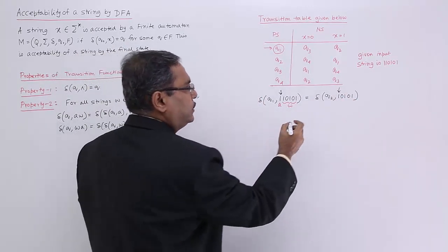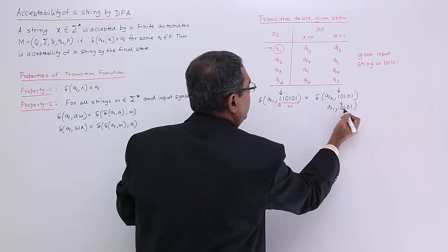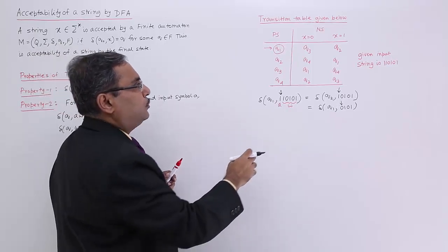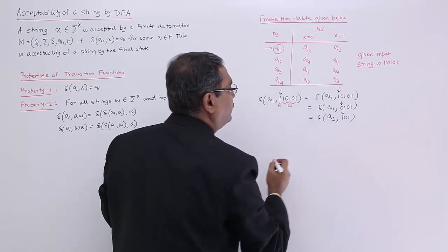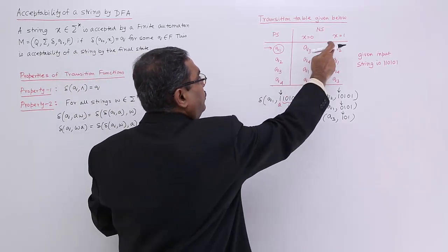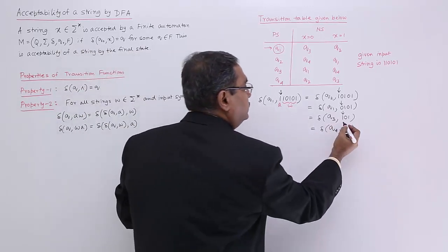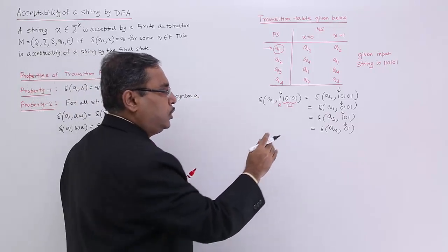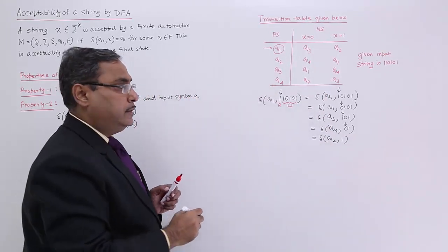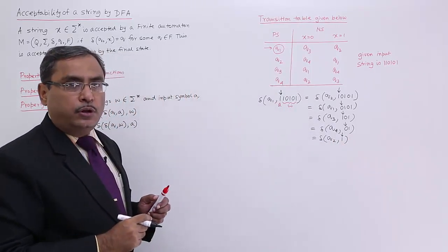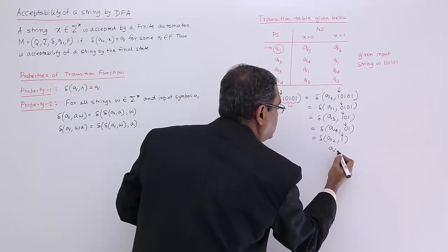Continuing the trace: delta(q2, 1) gives q1, delta(q1, 0) gives q3, delta(q3, 1) gives q4, delta(q4, 0) gives q2, and finally delta(q2, 1) gives q1. So after processing all six symbols of the input string 110101, we arrive at state q1 with the empty string kappa remaining.